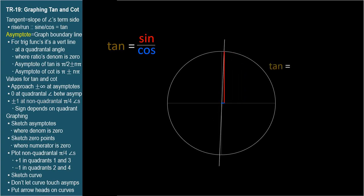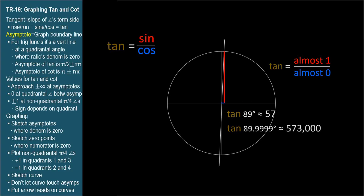As we let the angle get larger and closer and closer to a right angle, the sine gets closer and closer to one, and the cosine gets smaller, closer and closer to zero. This fraction grows very large. For example, the tangent of 89 degrees is about 57, and the tangent of 89.9999 degrees is about 573,000. As the angle approaches pi over two, the tangent approaches infinity.